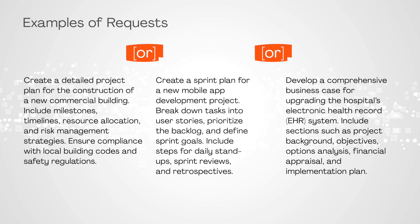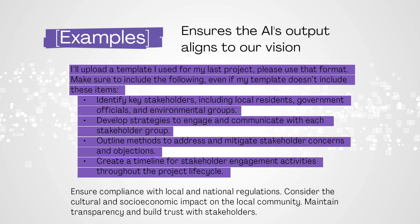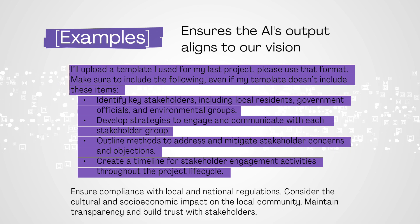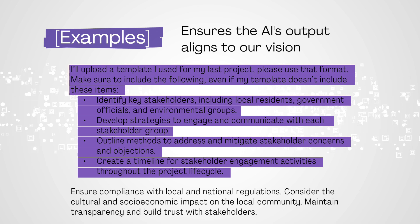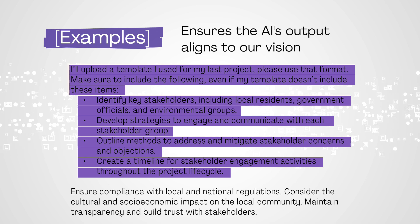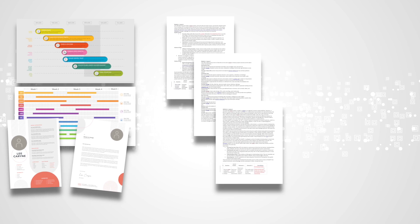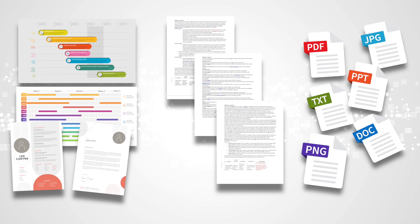However, words can only do so much, and examples are the next element of our formula. They play a crucial role in ensuring the AI's output aligns with our vision. We use examples to enhance the descriptiveness of our request and give the AI a baseline to compare its responses to. We can give LLMs actual examples of the output, summaries of external resources, and upload files from our knowledge bases, so long as we have permission to do so.